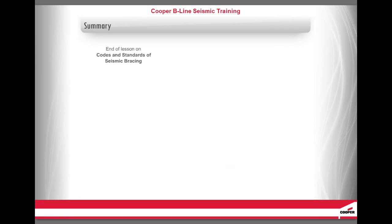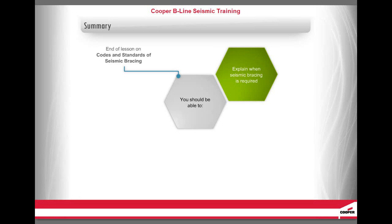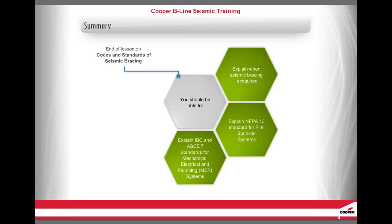You have come to the end of this lesson on seismic bracing codes and standards. Let's review what we have covered. You should now be able to explain when seismic bracing is required, explain the NFPA 13 standard for fire sprinkler systems, explain IBC and ASCE 7 standards for mechanical, electrical, and plumbing systems, and understand approvals and compliances.